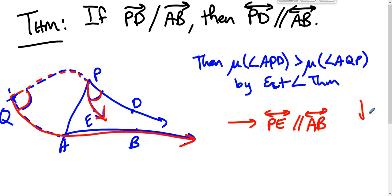Well, that's a contradiction because PD is a limiting parallel ray for AB. And so ray PE must intersect ray AB. So this cannot happen and therefore the theorem is established.